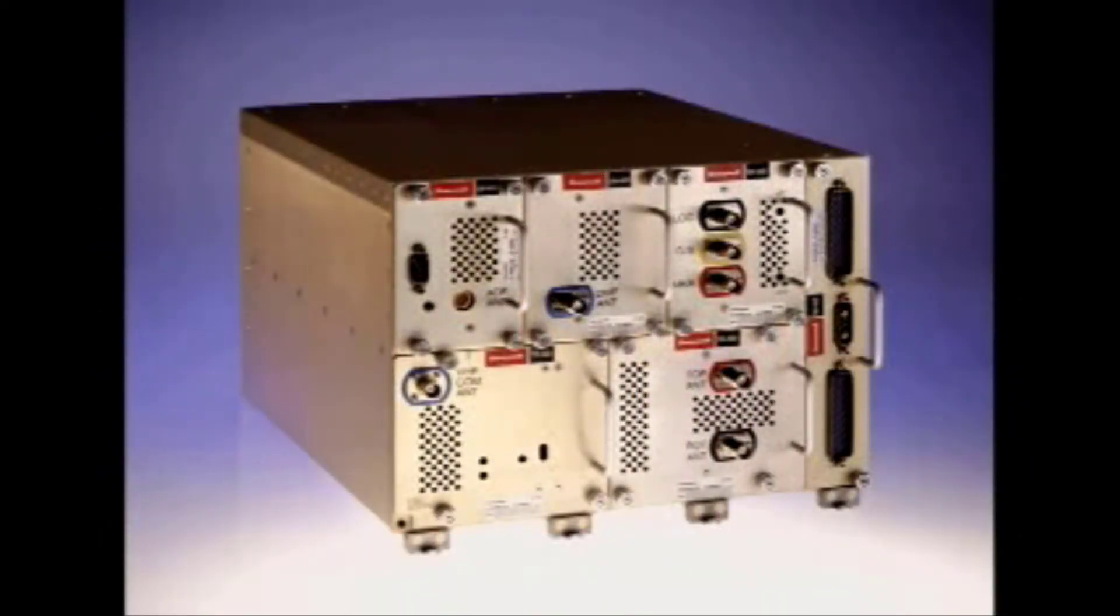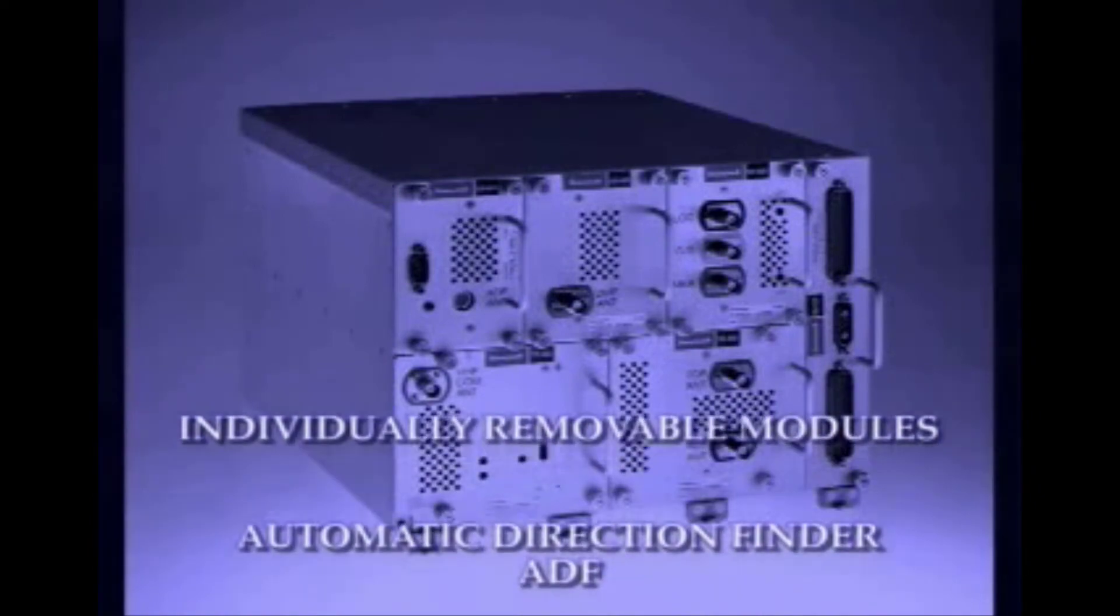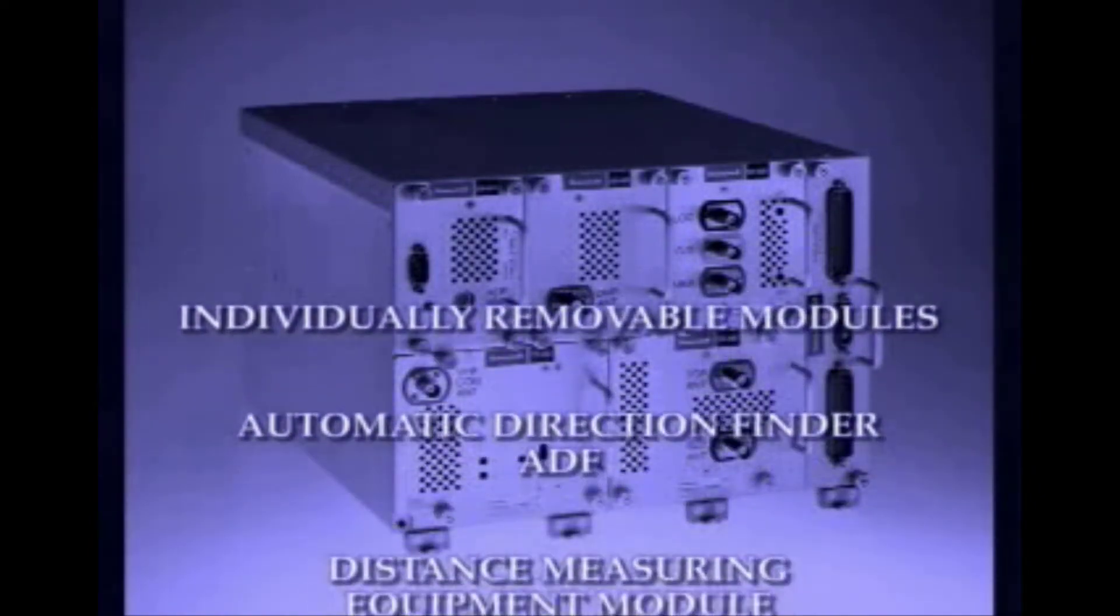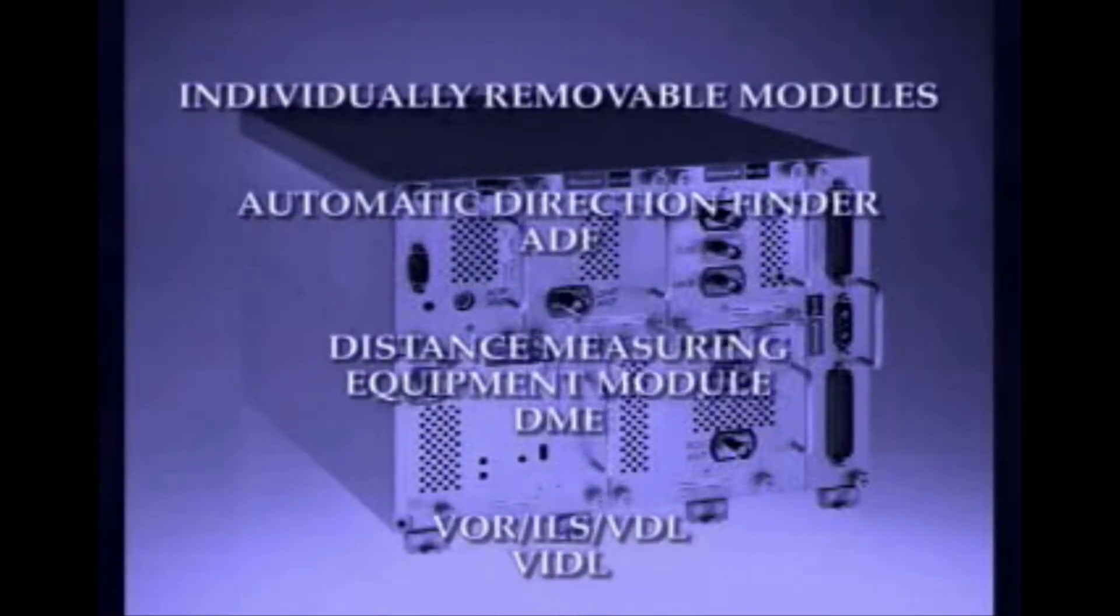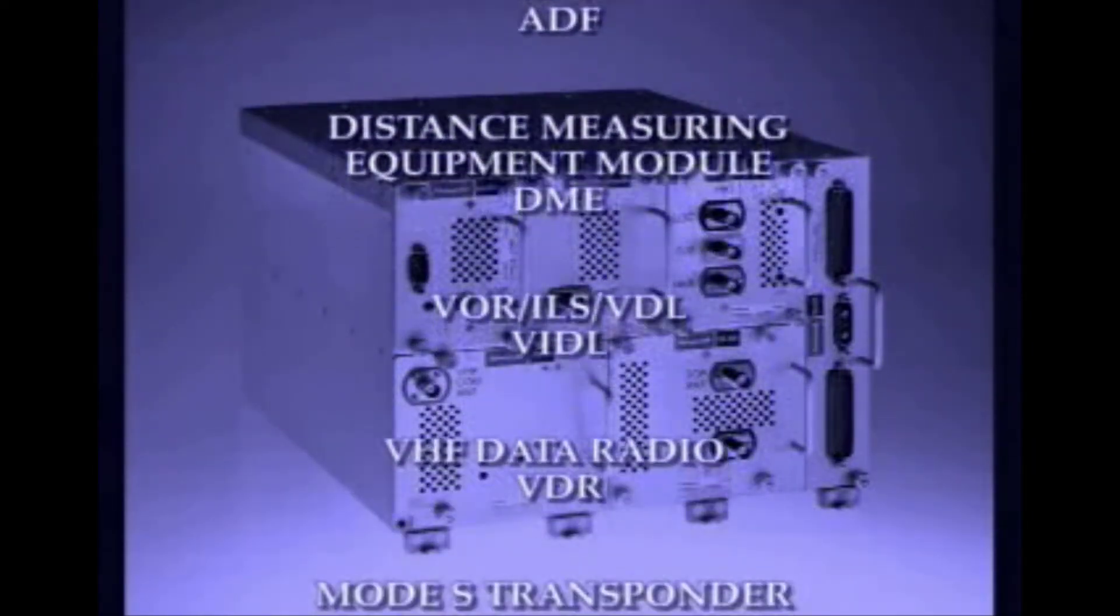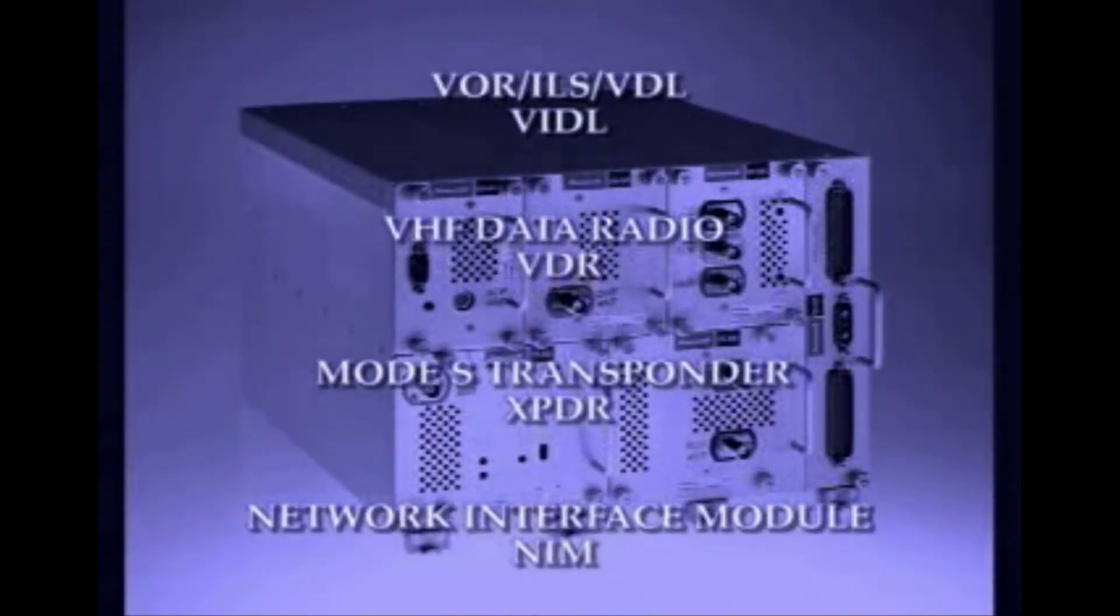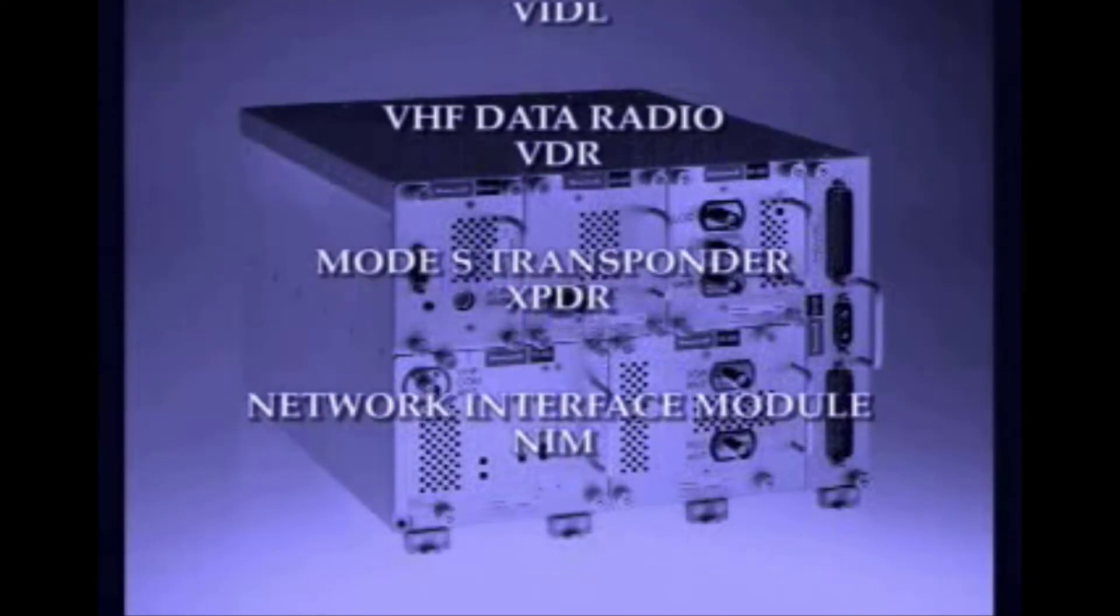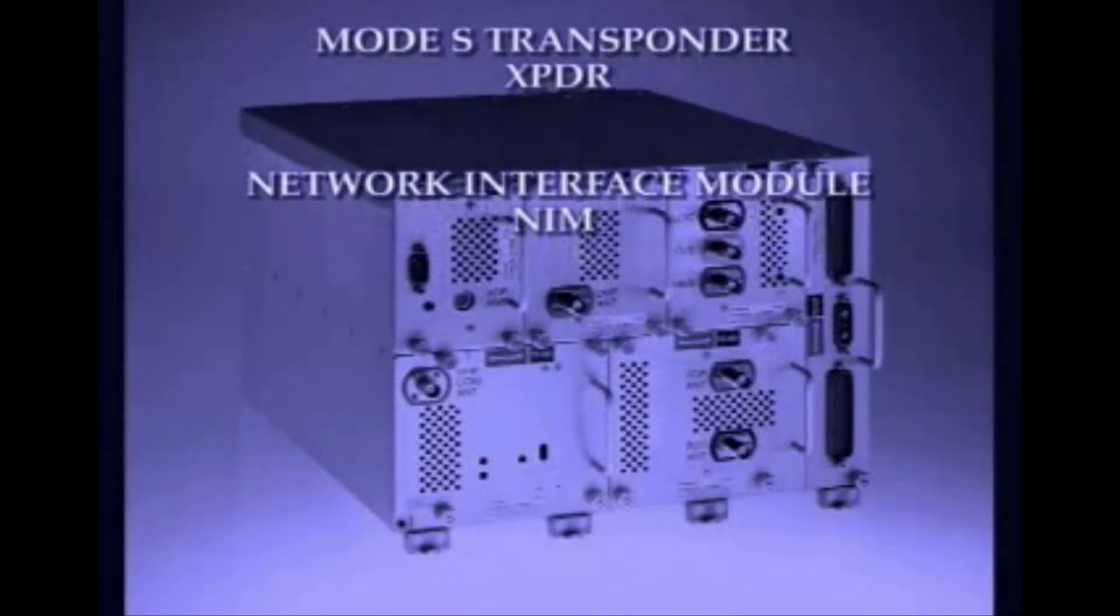The MRC houses up to six individually removable modules. Module types include Automatic Direction Finder Module, Distance Measuring Equipment Module, VITL, which combines the functionality of the Primus 2 NV855 NAV module with a VHF Data Link, VHF Data Radio Module, which replaces the existing Honeywell Primus 2 TR855 COM, Mode S Transponder, and the Network Interface Module.